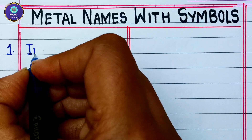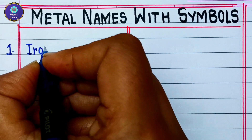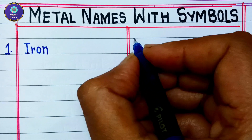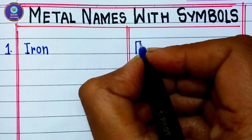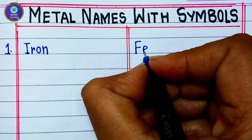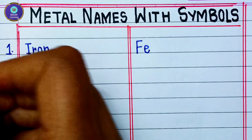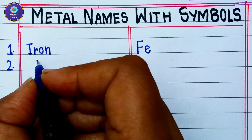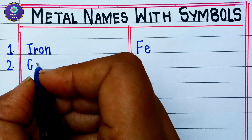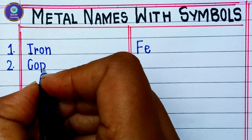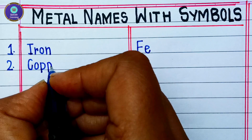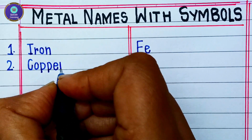The first metal is iron — I, R, O, N — iron, and its chemical symbol is Fe. Second is copper — C, O, P, P, E, R — copper.